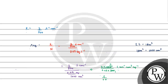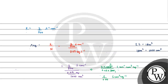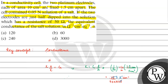We get 6 by 0.05, which simplifies to 120. So the equivalent conductance is 120 ohm inverse cm² equivalent inverse, and option A is the correct answer for this question.